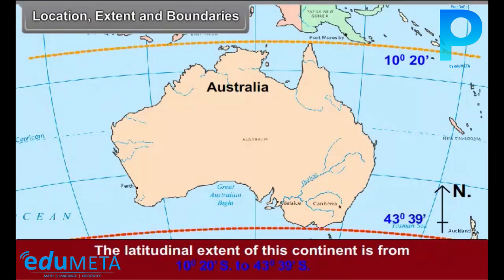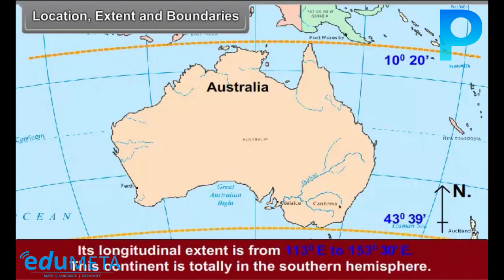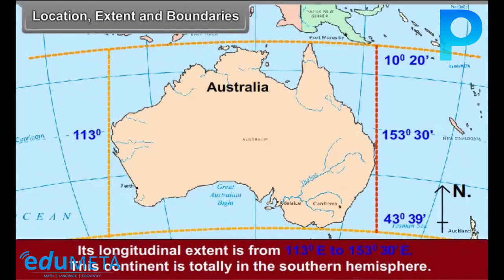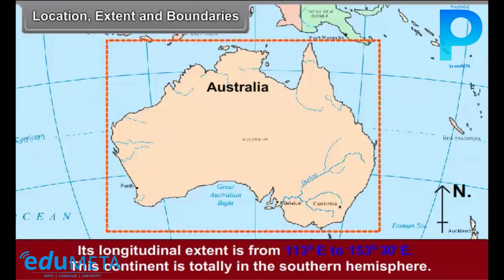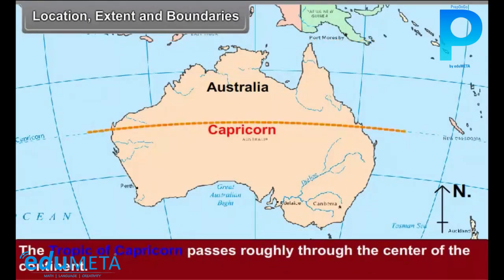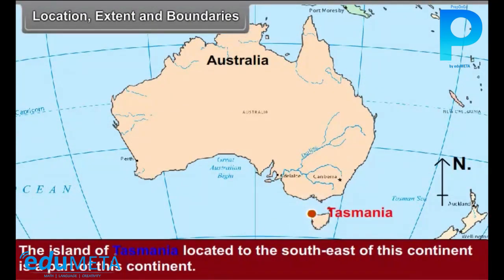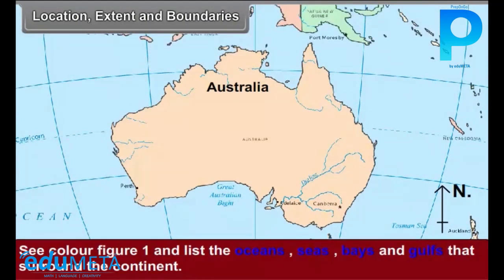43 degrees 39 seconds south. Its longitudinal extent is from 113 degrees east to 153 degrees 30 seconds east. This continent is totally in the southern hemisphere. The Tropic of Capricorn passes roughly through the center of the continent. The island of Tasmania, located to the southeast of this continent, is a part of this continent.